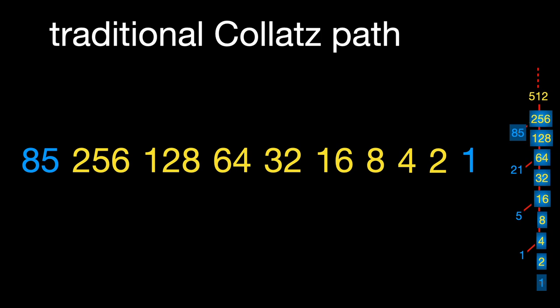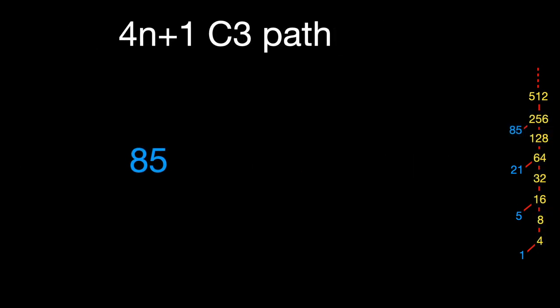The rule C3 allows us to create consistent segments delimited by the odd numbers 85, 21, 5, and 1.